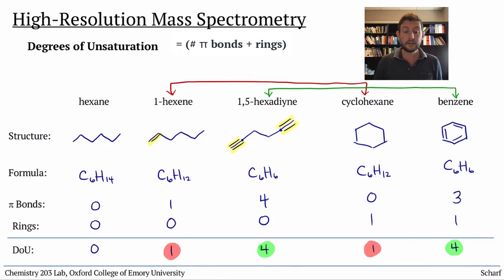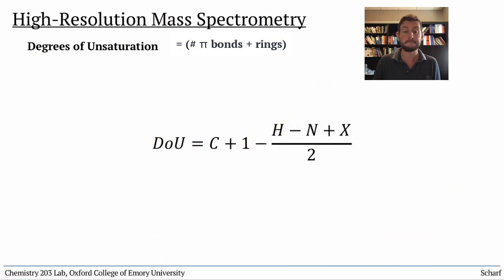To calculate the number of degrees of unsaturation from a molecular formula, we use the following formula. The DOU equals C plus 1 minus the quantity H minus N plus X all over 2.